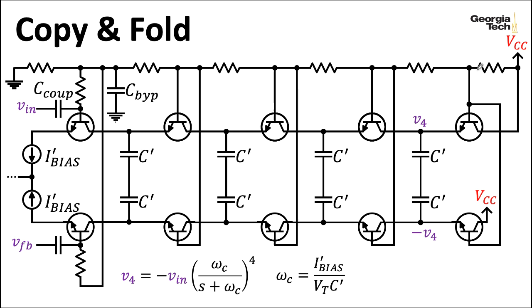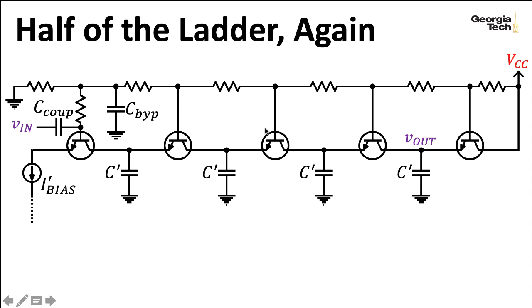So before moving on, let's remind ourselves about what the overall structure of this half ladder, as I've been calling it, is. We have our transistors and capacitors, we have our bias current, we have the coupling capacitor bringing in the input, and then we have our DC bias network.